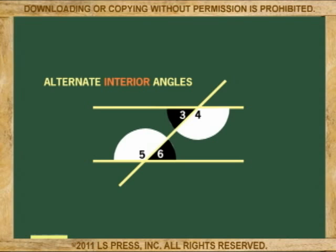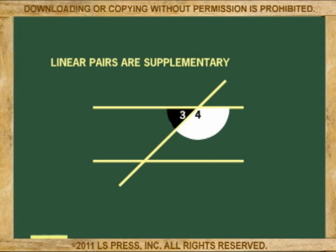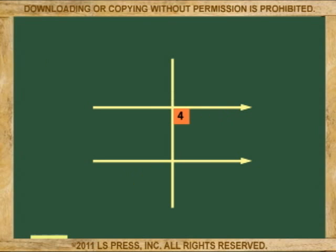Why? Let's see. These two angles 3 and 4 are a linear pair, and you know from Chapter 2 linear pairs are supplementary. In other words, they add up to 180 degrees. Angle 4 and angle 6 are also supplementary because the lines are parallel.